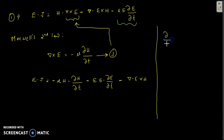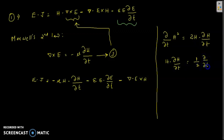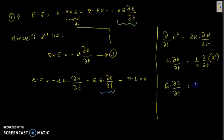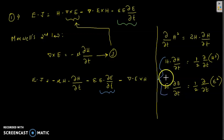Using Maxwell's second law, del cross E equals minus mu times the partial derivative of H. Substituting this, E dot J becomes minus mu times H dot the partial derivative of H, minus epsilon times E dot the partial derivative of E, minus the divergence term. The derivative of H squared is 2H dot dH/dt, so H dot dH/dt equals half the partial derivative of H squared. Similarly, E dot dE/dt equals half the partial derivative of E squared.